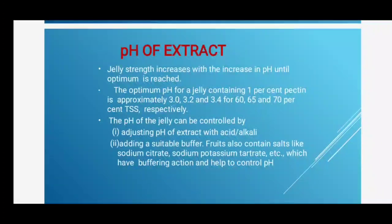Jelly strength increases with increase in pH until the optimum is reached; further addition of acid decreases jelly strength. The optimum pH for jelly containing 1% pectin is approximately 3.0 to 3.4: at pH 3.0, 60% TSS; at pH 3.2, 65% TSS; and at pH 3.4, 70% TSS. The pH of the jelly can be controlled by adjusting with acid and alkali or adding a suitable buffer. Fruits also contain salts like sodium citrate and sodium potassium tartrate which have buffering action. In general, the optimum pH value of jelly is 3.2.